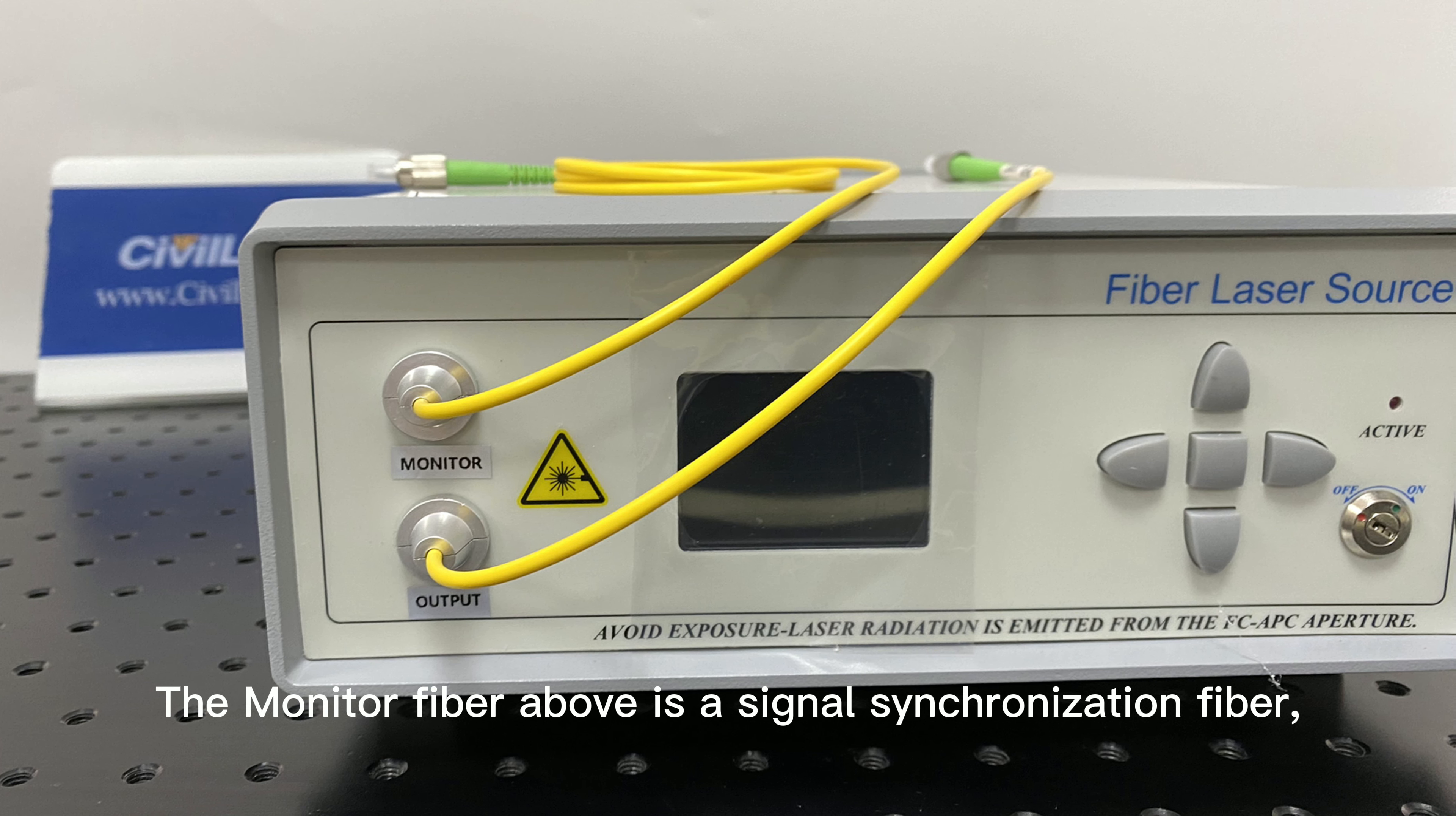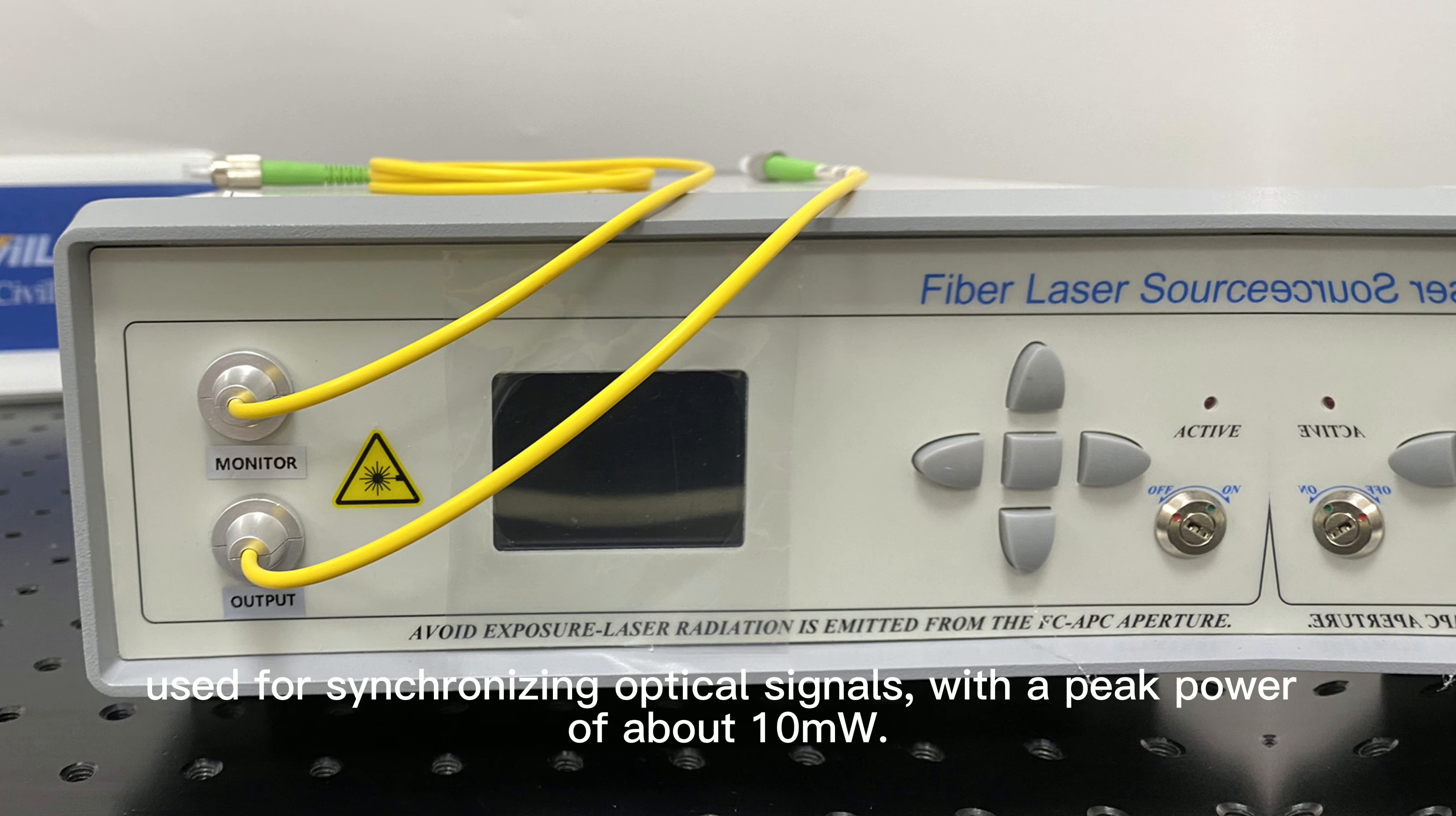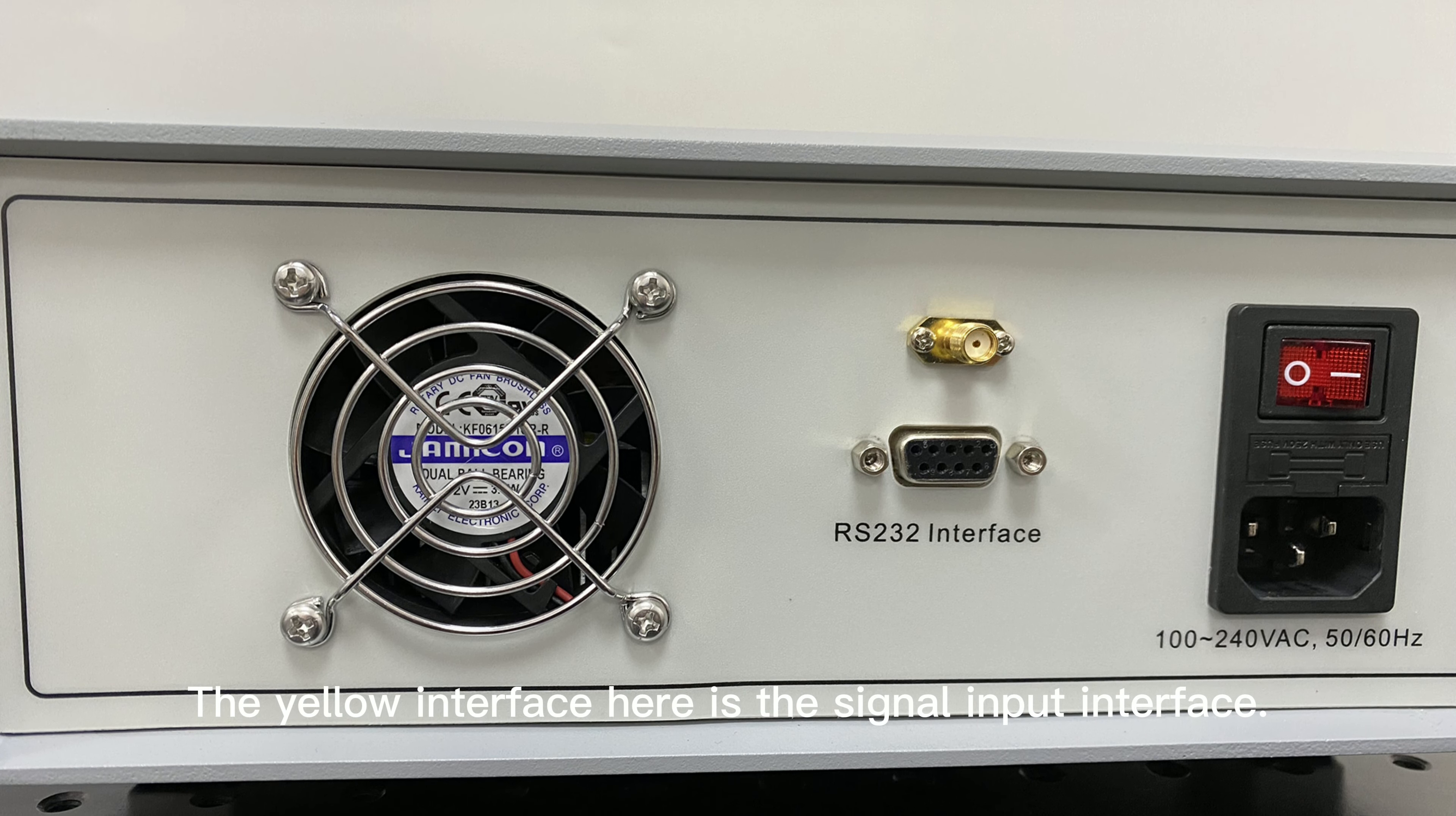The monitor fiber above is a signal synchronization fiber used for synchronizing optical signals with a peak power of about 10 milliwatts. The signal can be built-in or external input. The yellow interface here is the signal input interface.